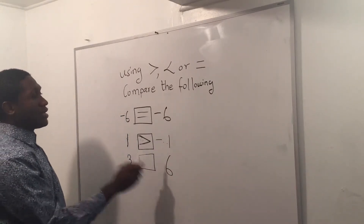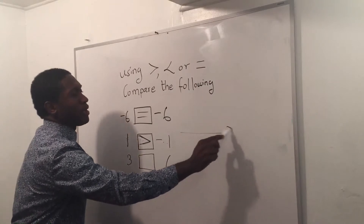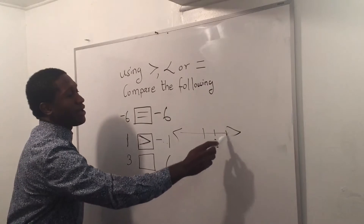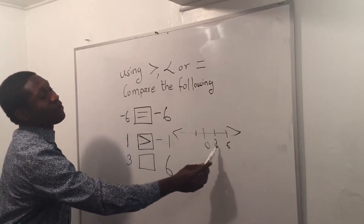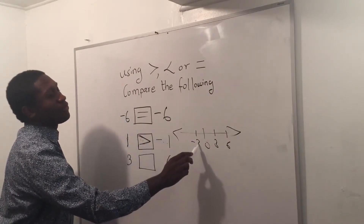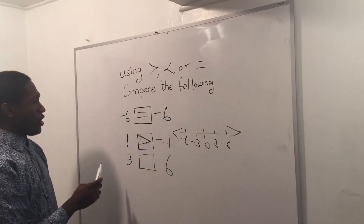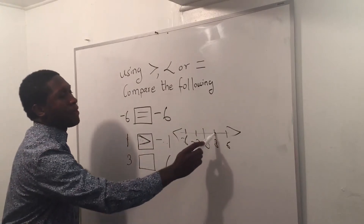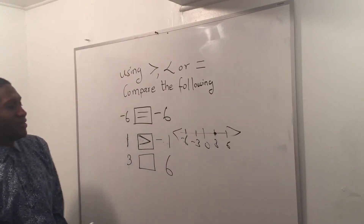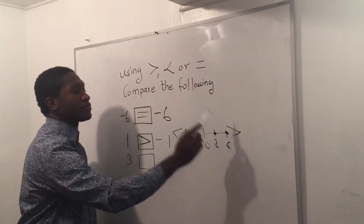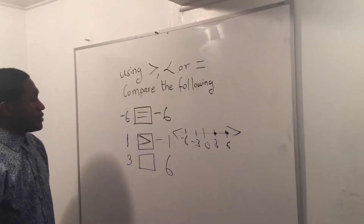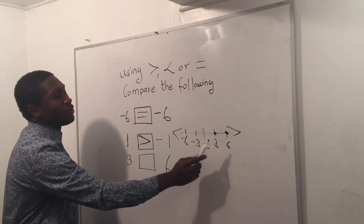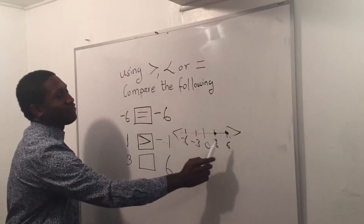Let me do the last one — three and six. I'll put them on the number line again. Here's my zero, then three, then six. Going backwards we have negative three and negative six. This three is right there and this six is right there on the number line.